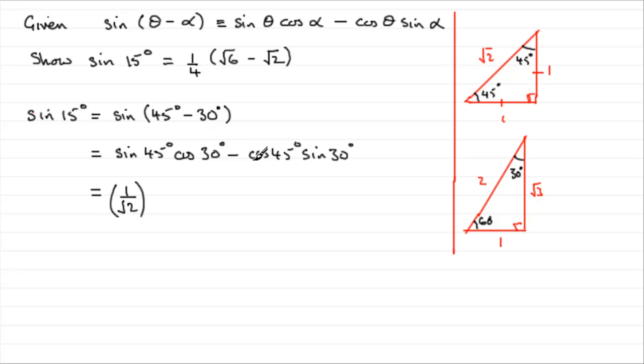Cosine of 30, taking 30 degrees up here, cosine is adjacent over hypotenuse, so it'll be root 3 over 2, so we've got times root 3 over 2.